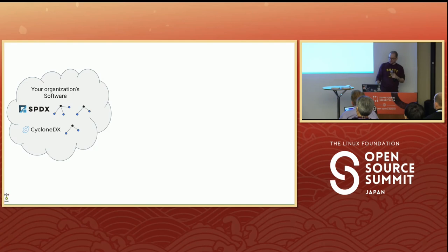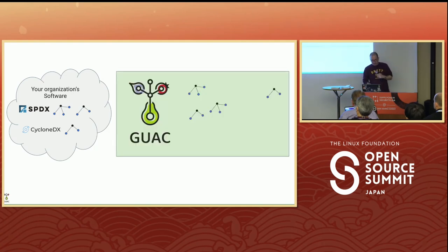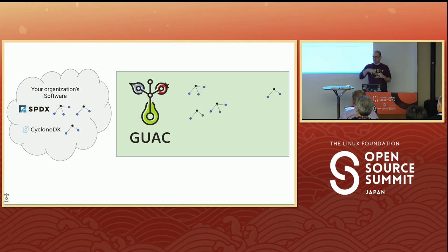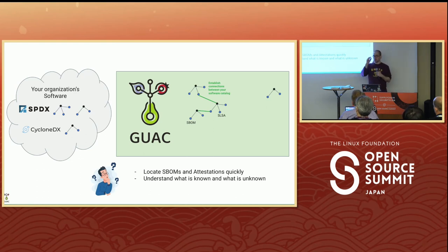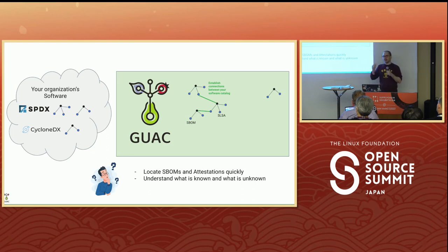Let's take a deeper dive. You have a bunch of software, a bunch of different SBOMs in different formats, and you send them over to GUAC. Once ingested, GUAC can start establishing the connections between that software. If you have references between different software — whether hashes, PURLs, or CPEs — it can determine that two documents are making claims about the same piece of software and begin to turn that into a graph.